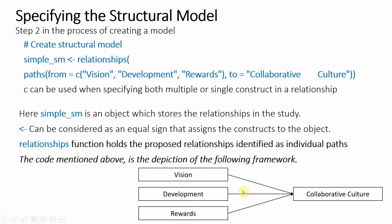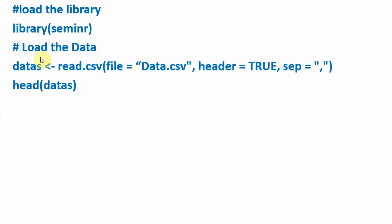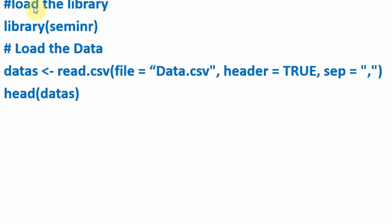Let's say this is the model that we want to test. We want to assess the path from vision, development, and rewards to collaborative culture. The code developed so far first loads the library, then loads the data into a data object. You can give it any name you want, but make sure the names are meaningful.